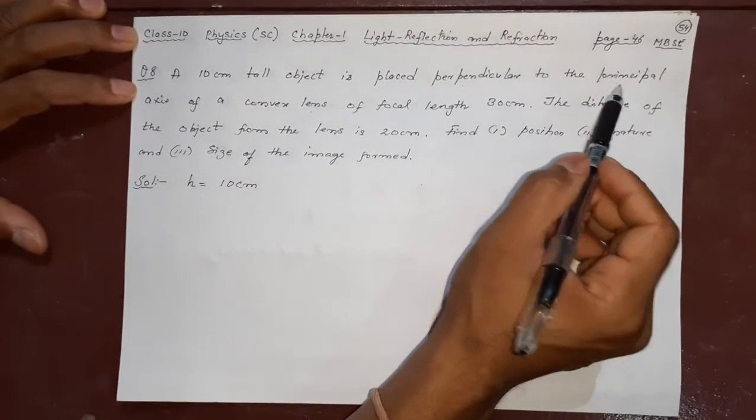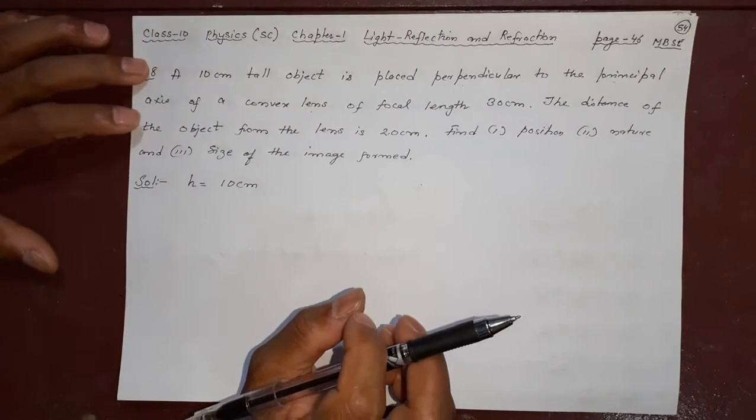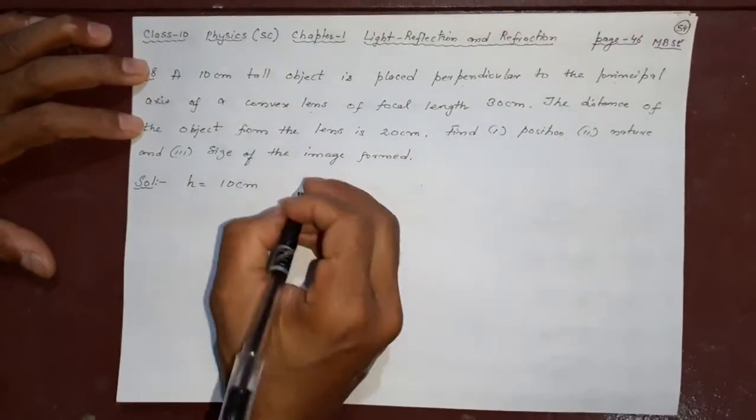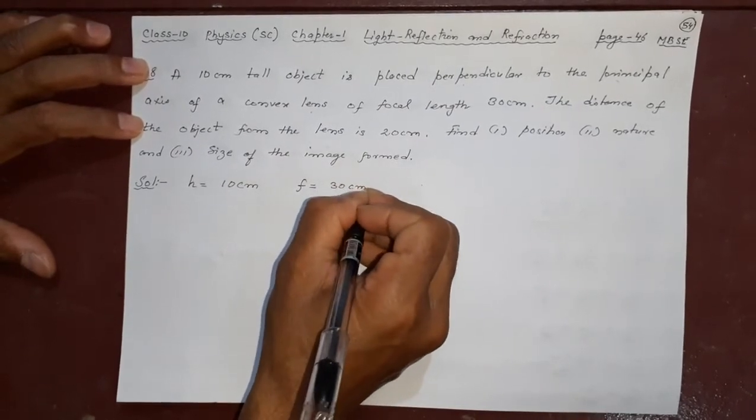This has no meaning, principal axis perpendicular, always it is kept like this, that is nothing new. Of a convex lens, that means focal length is 30. It should not be negative, convex is plus.